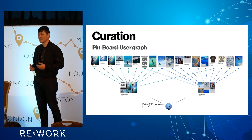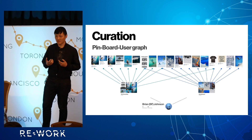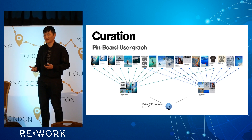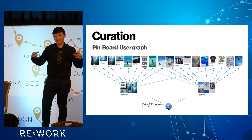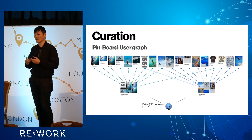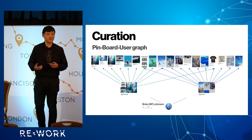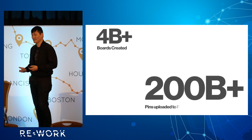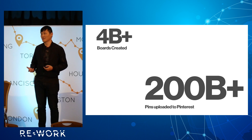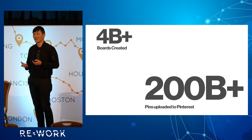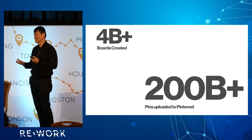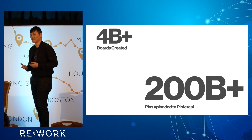The general idea of Pinterest is that we have this really important data set — the pin, board, user graph. It's essentially a graph: for a given user they have multiple boards, different boards have different pins, and the same pin can exist in multiple boards. We have this data at really large scale — over 4 billion collections, over 200 billion pins. Machine learning figures out how to give the best recommendations.